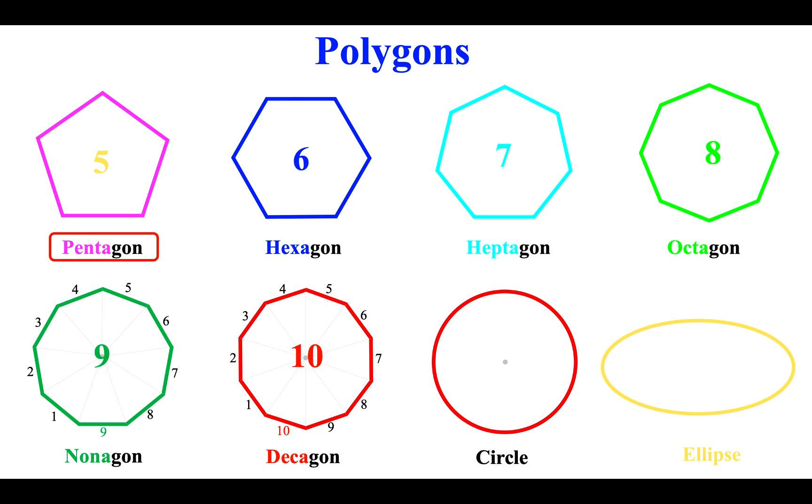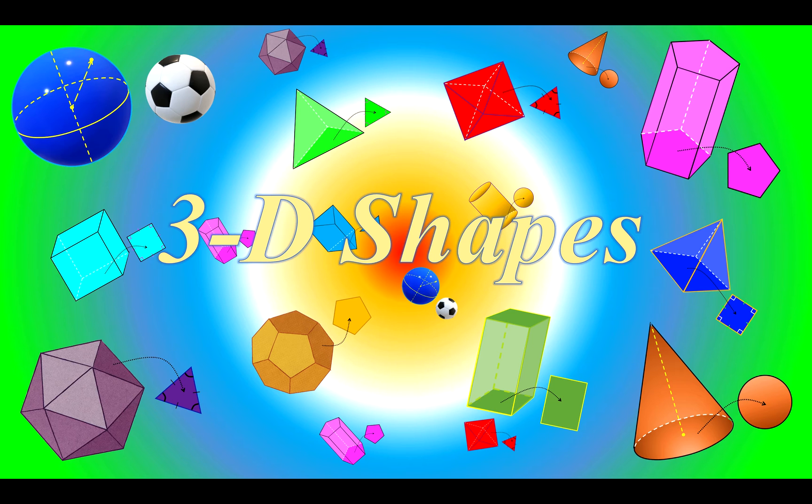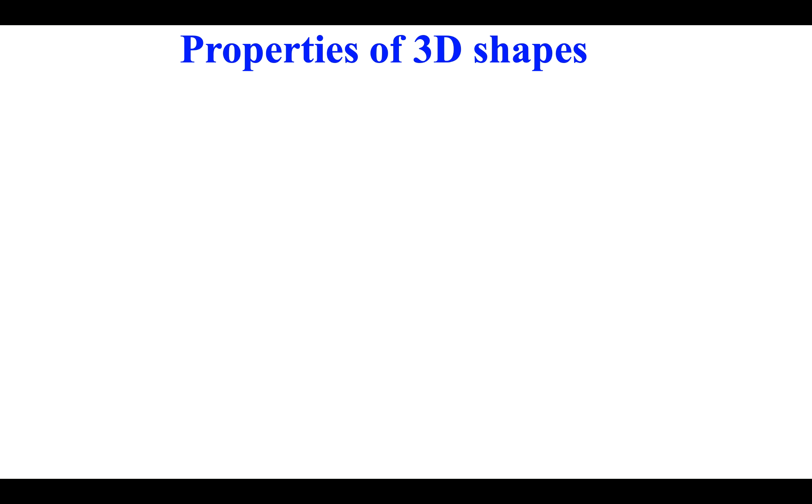Polygons: Hexagon, heptagon, octagon, nonagon, decagon. Circle, ellipse. 3D shapes.